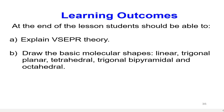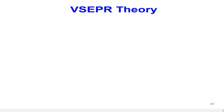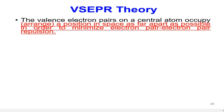According to VSEPR theory, the valence electron pairs on a central atom occupy or arrange a position in space as far apart as possible in order to minimize electron pair repulsion.